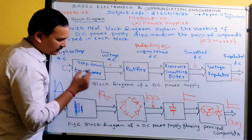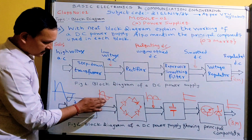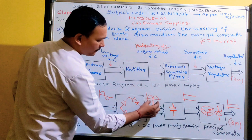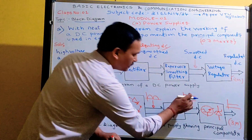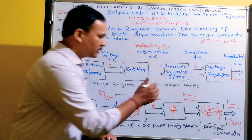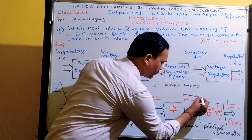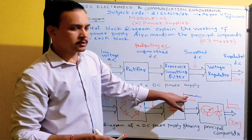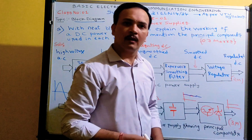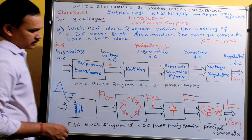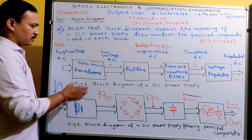You are also requested to write the waveforms. First write the statement, then draw the waveform: high voltage AC, low voltage AC, pulsating DC — which has an AC component and the negative half-cycle removed — then smoothed DC where the ripple is reduced. Note that even after using the reservoir circuit, there will still be some small ripple remaining. That small residual ripple is taken care of by the voltage regulator.